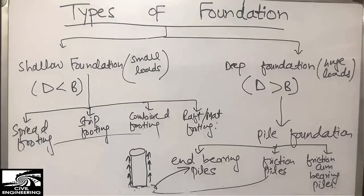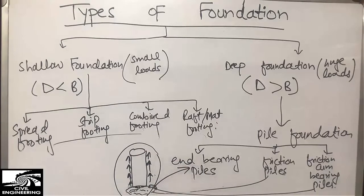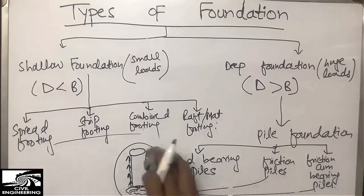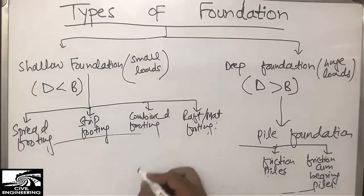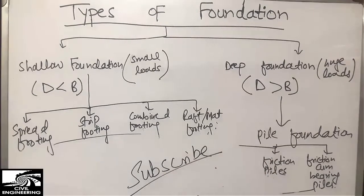Friction-cum-bearing piles, the third type, are provided when the strata below is hard and resistance is also offered by the sides of the soil. So we call them friction-cum-bearing piles. This concludes our discussion on the types of foundation. If you have any questions, please comment and we will respond as soon as possible. Please subscribe our channel for more civil engineering videos — thank you for watching.